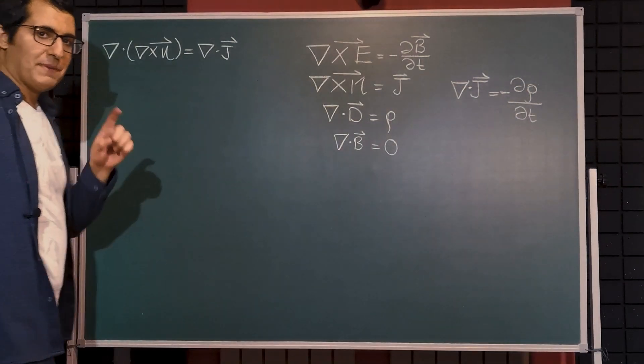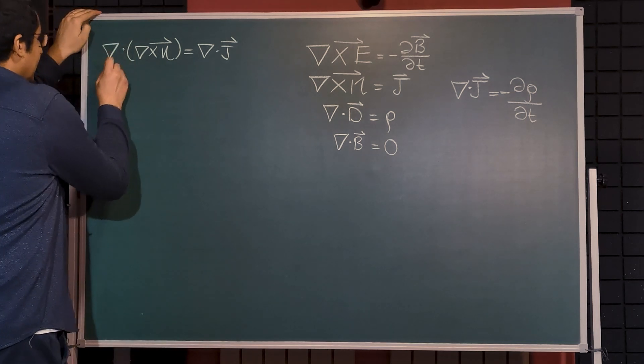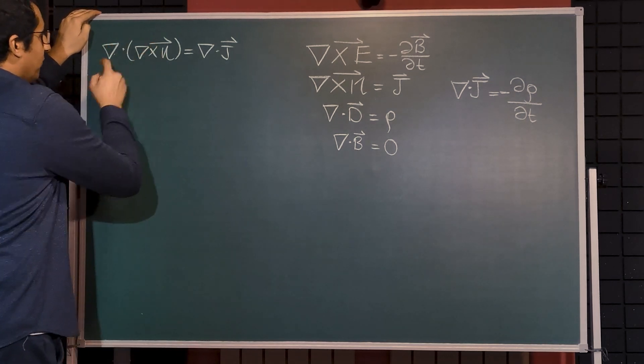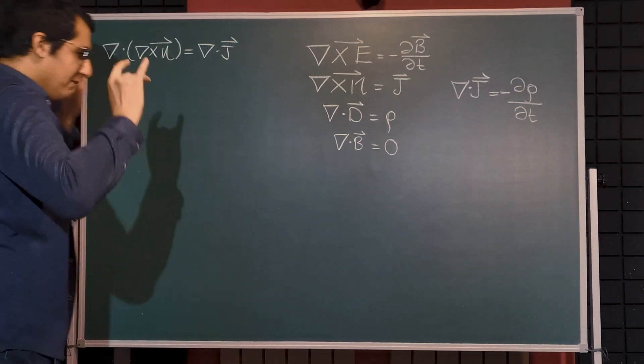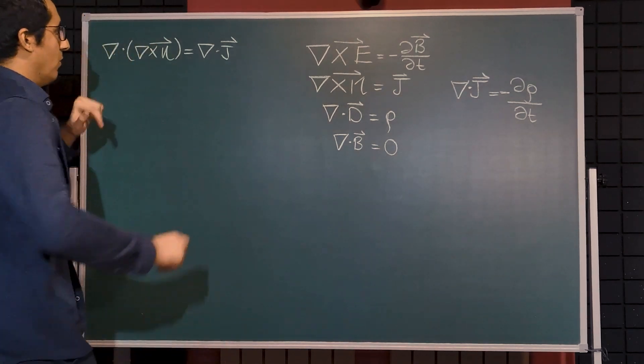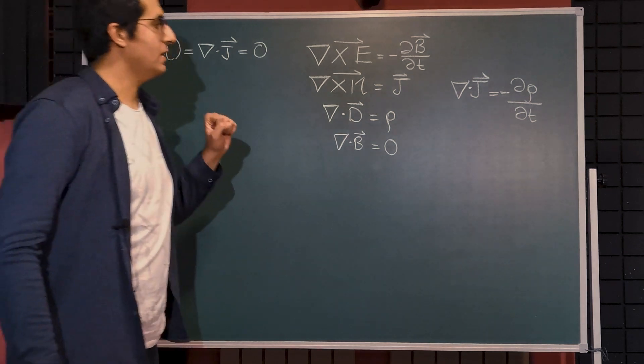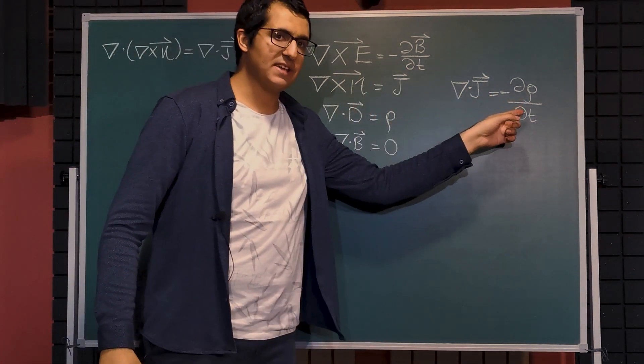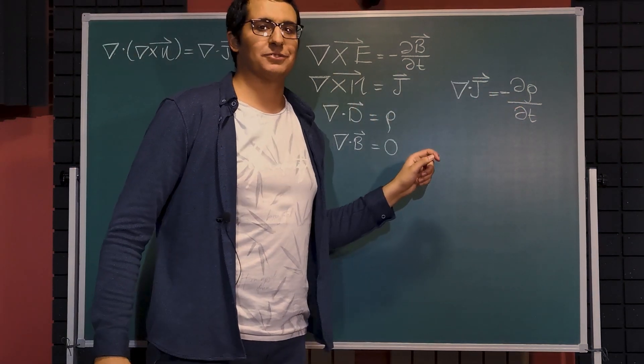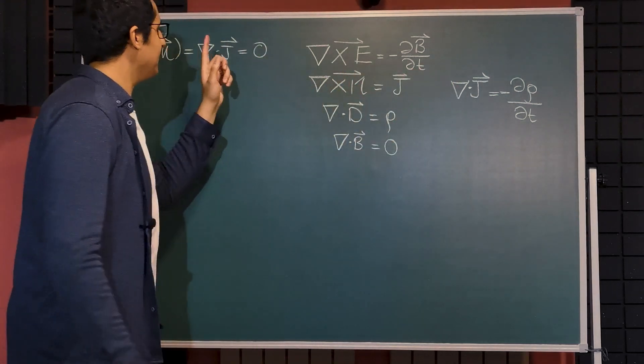However, according to a mathematical identity, we know that the divergence of the curl of any vector field must be zero. This must be zero. And this cannot be true because we have a non-zero charge density, which oscillates with respect to time. And this cannot be zero.